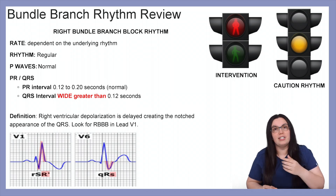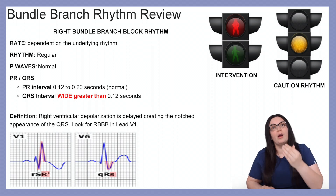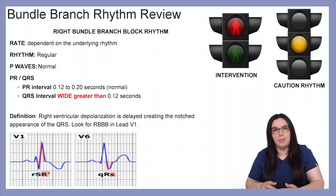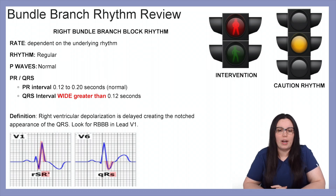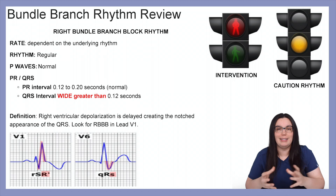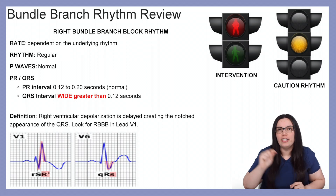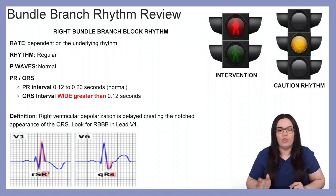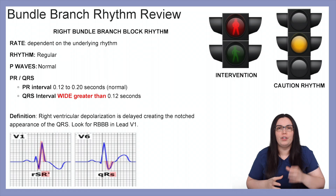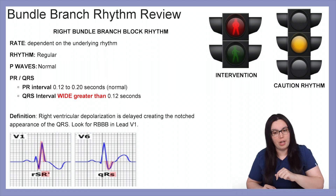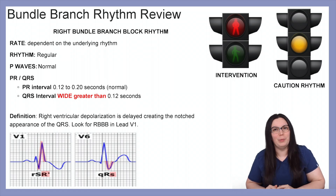The definition specifically for our right bundle branch blocks is right ventricular depolarization being delayed, creating that notched appearance on the QRS. You're going to look for your right bundle branch blocks in lead V1.